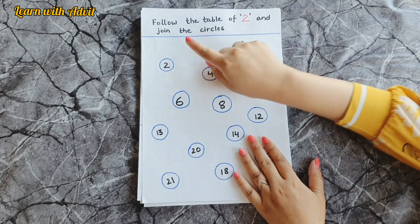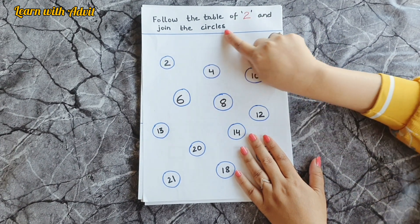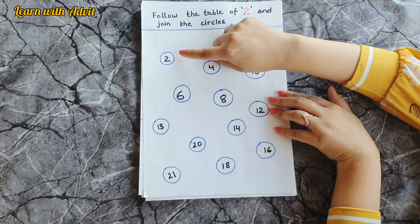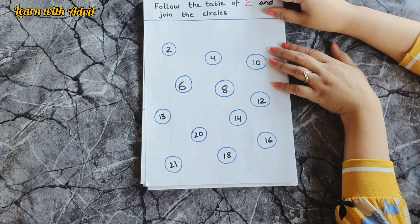In this sheet, what you have to do? Follow the table of 2 and join the circles. So you have to tell the table of 2 and join. Start doing it.